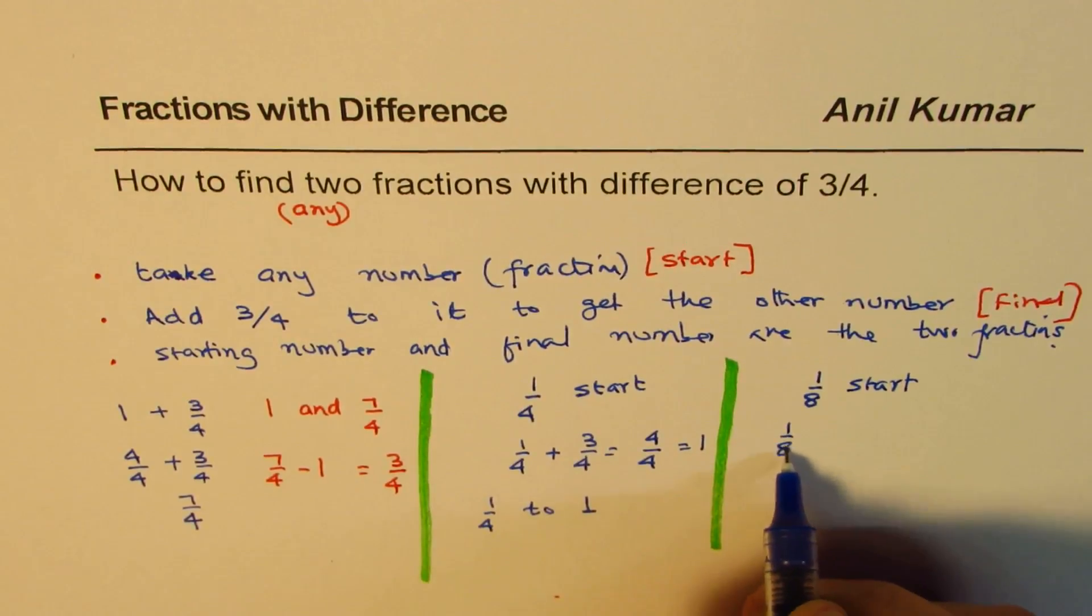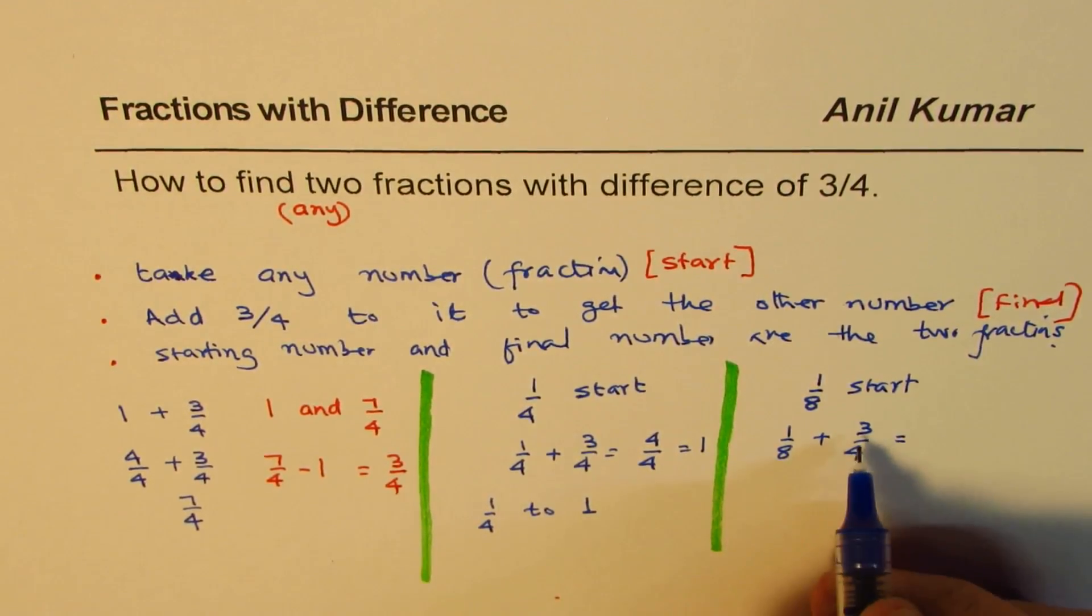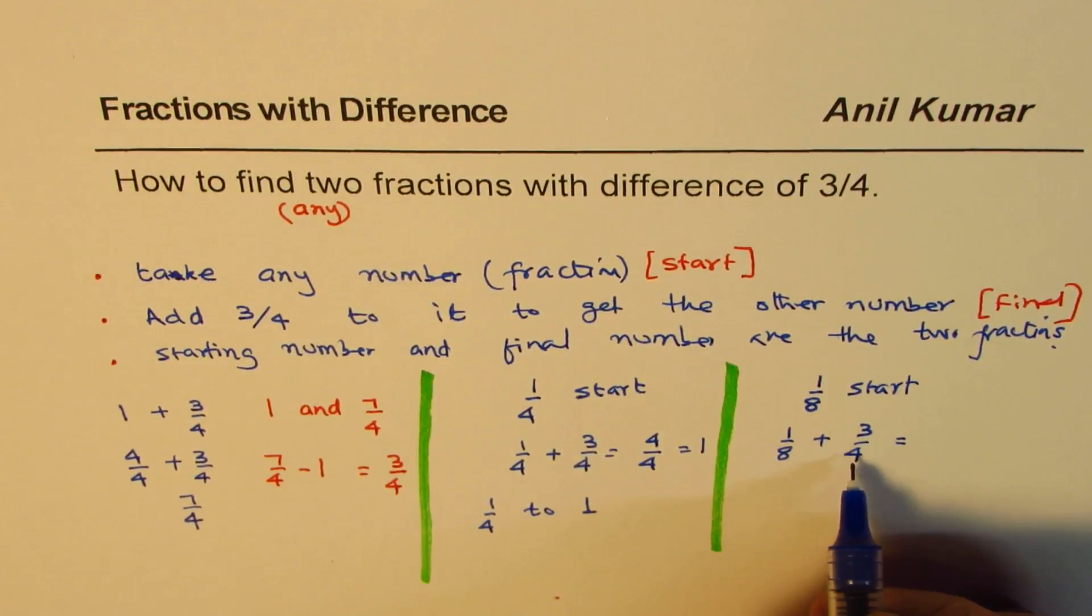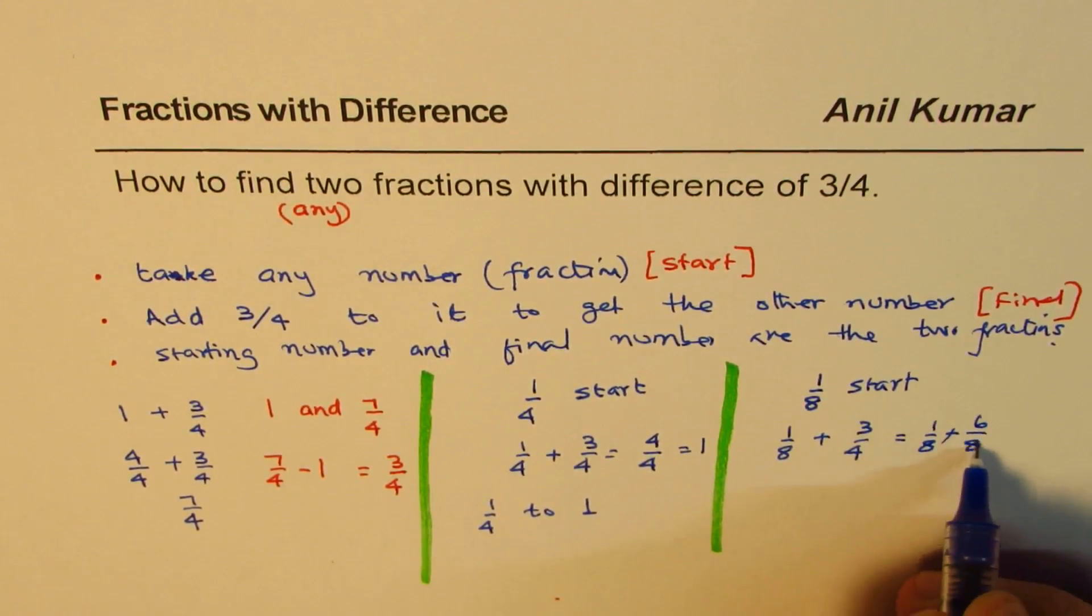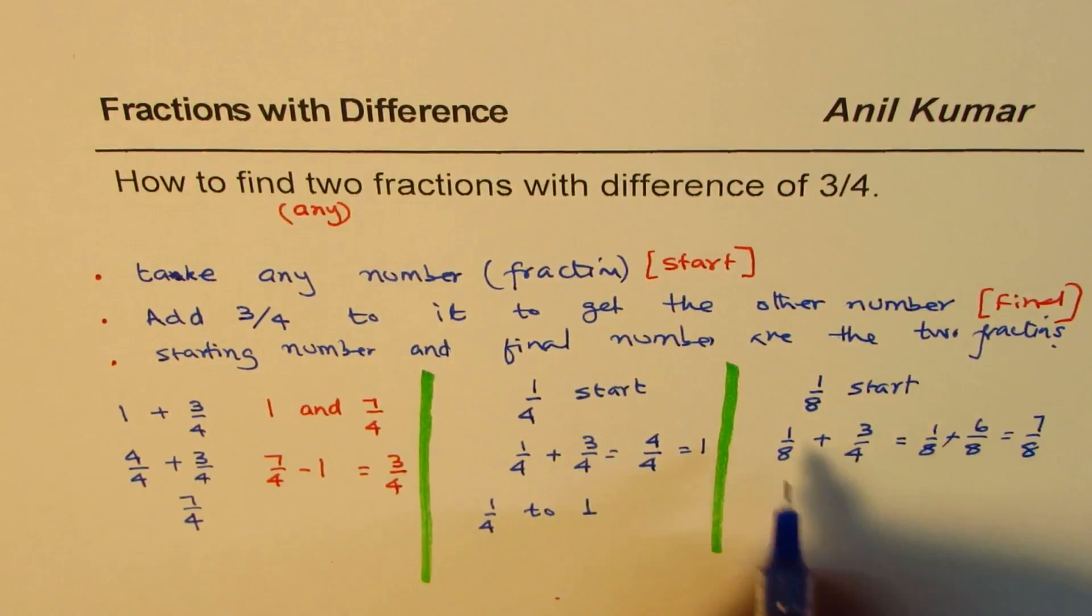Let's add 3 fourths to it plus 3 out of 4. So, common denominator, that means we should write this as something over 8. Multiply both by 2. So, 1 out of 8 plus multiply by 2 gives us 6 out of 8. Let's add,